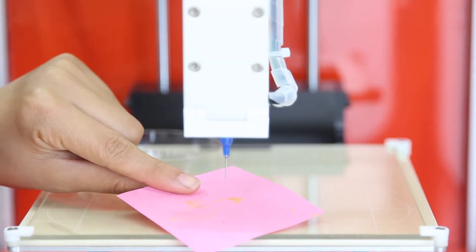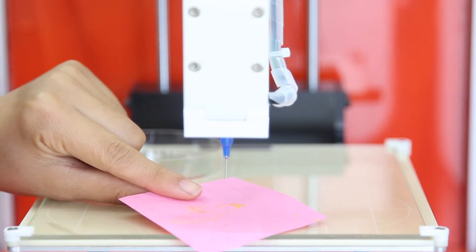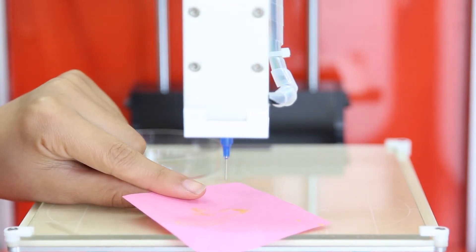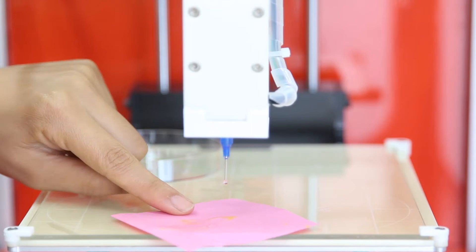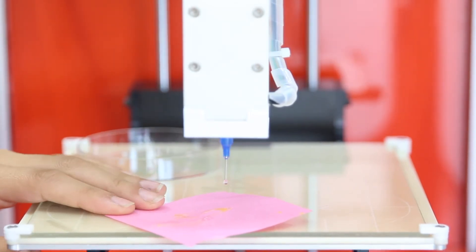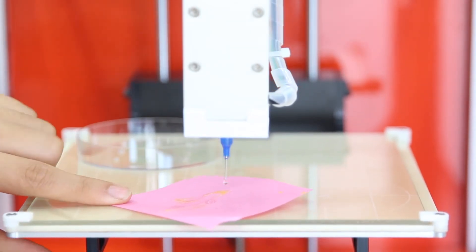Once you have done this, insert the extruder clips, prime the syringe by extruding until you find a bit of material coming out, and set the Z0 position for this next syringe.